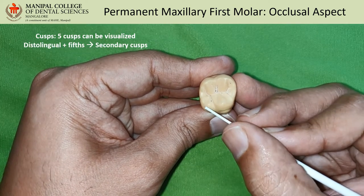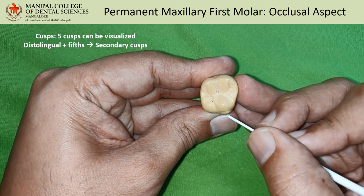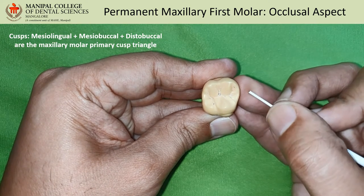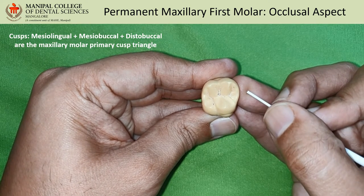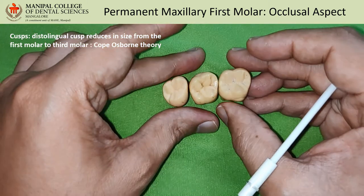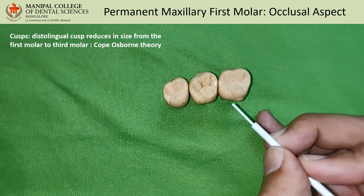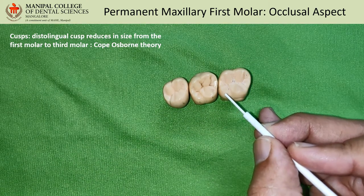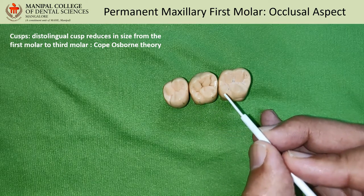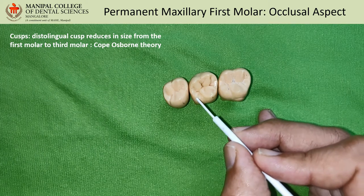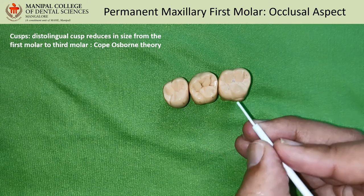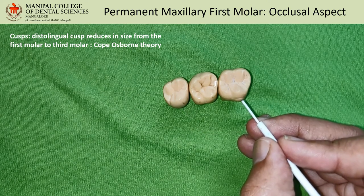The mesio-lingual, mesio-buccal, and disto-buccal cusps are the primary cusps. The disto-lingual and the fifth cusp are the secondary cusps. The three primary cusps form the maxillary molar primary cusp triangle. According to the Cope-Osborn theory, on an evolutionary basis, the disto-lingual cusp disappears progressively from the first molar to the second molar to the third molar.